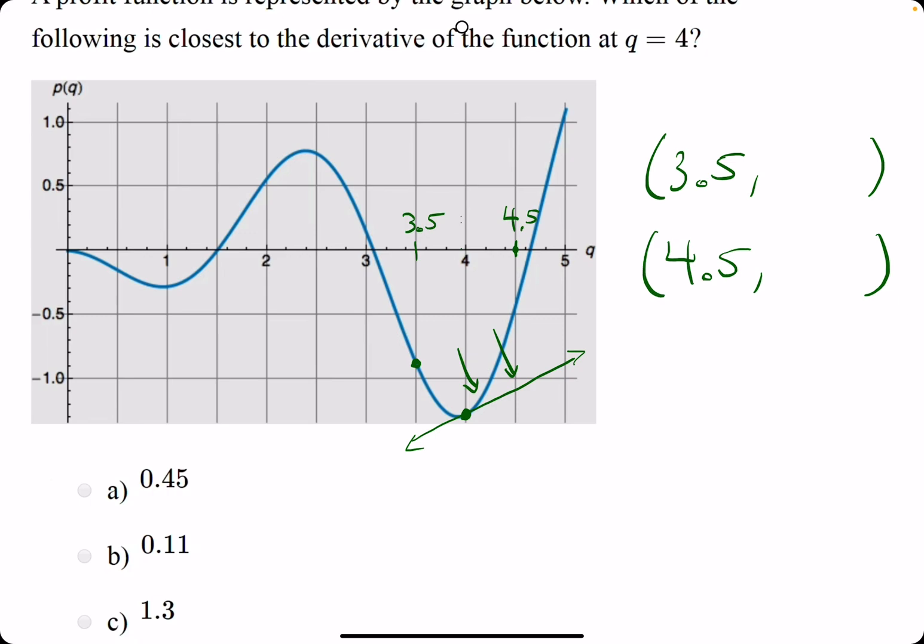This point at 3.5, I would say it's approximately at negative 0.9. And then at 4.5, we're looking at maybe negative 0.4.